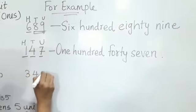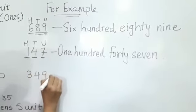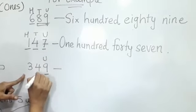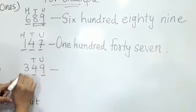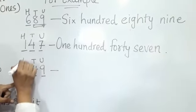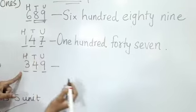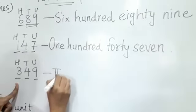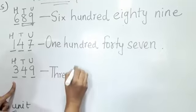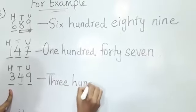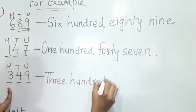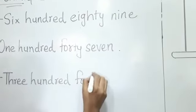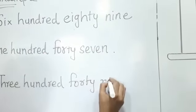Another example — we have 3 on the hundreds place, 4 on the tens, and 9 on the unit. So the number name is three hundred forty nine.